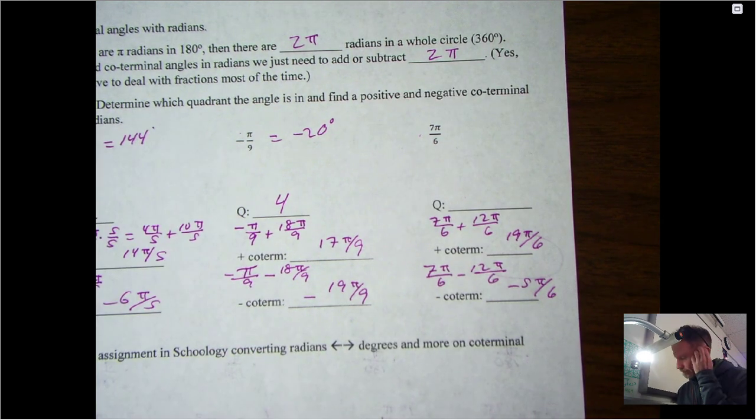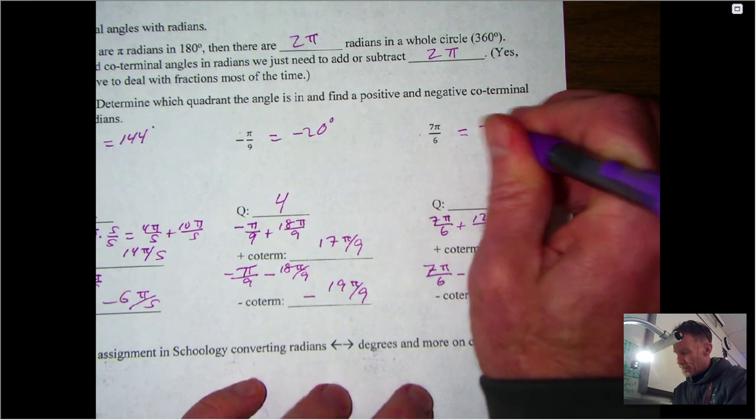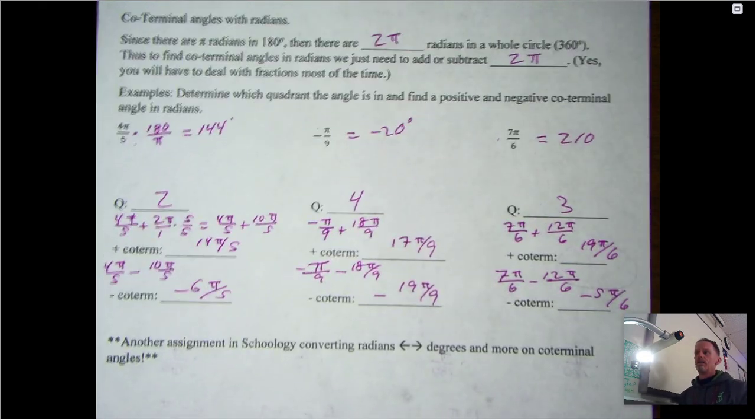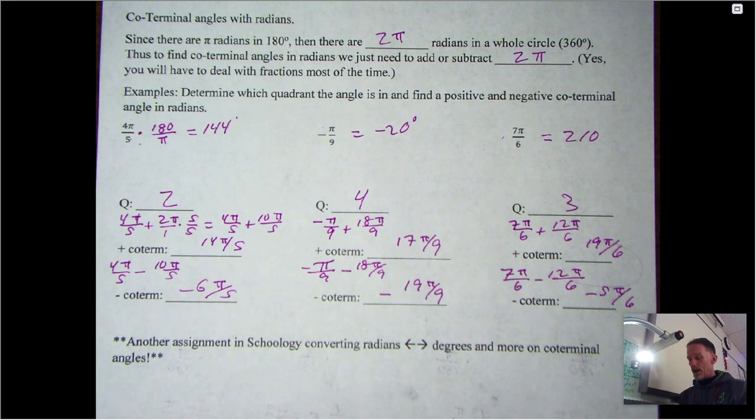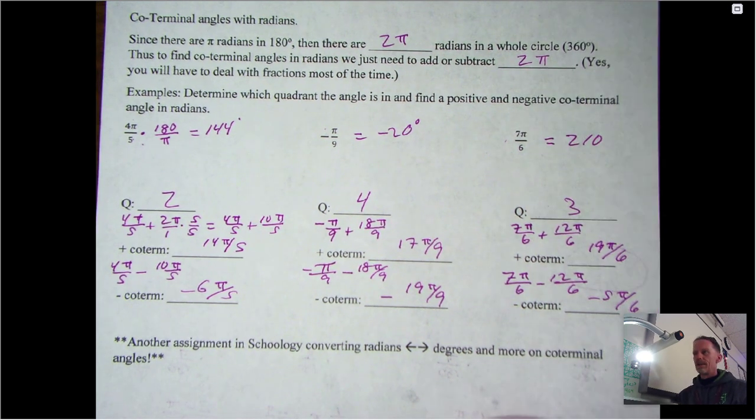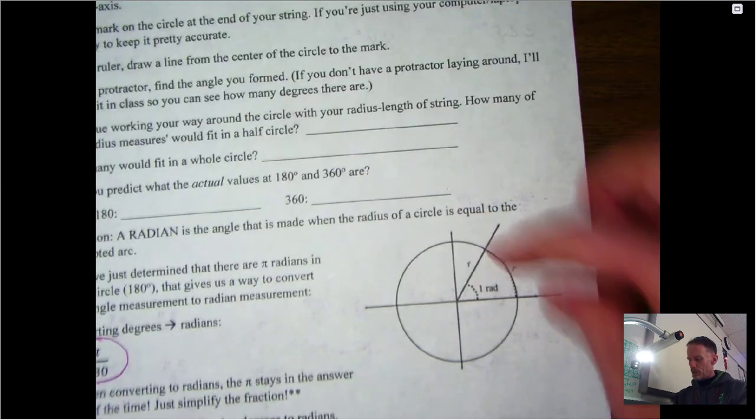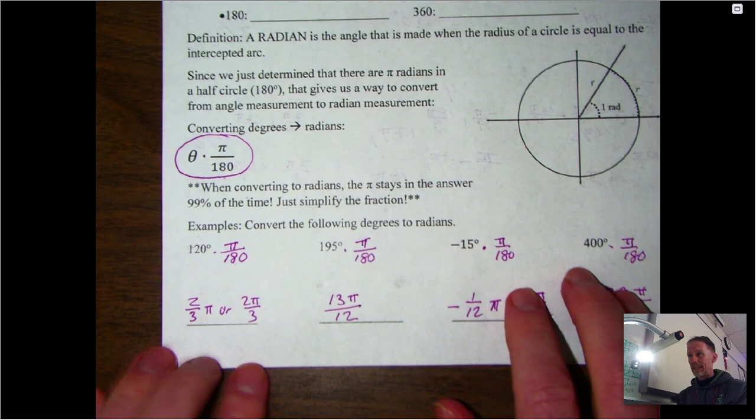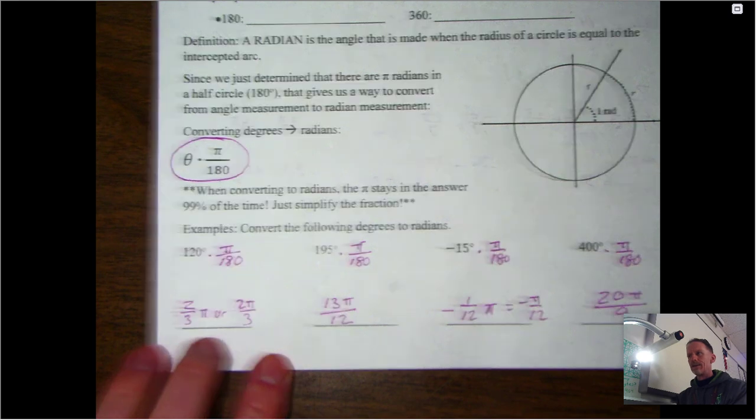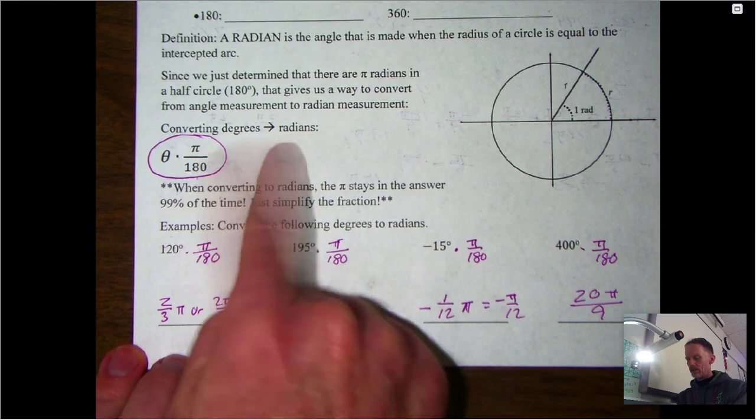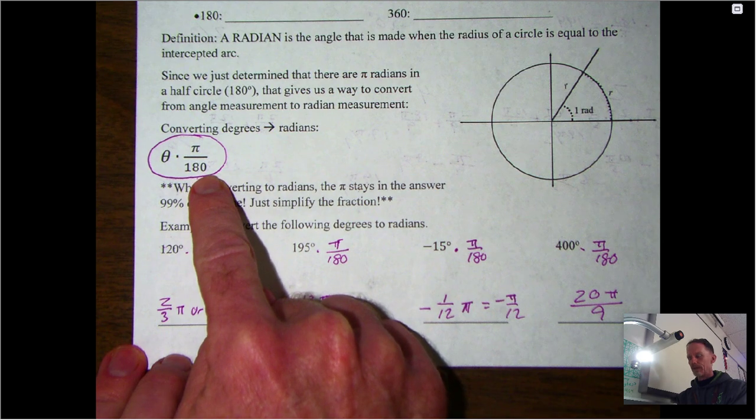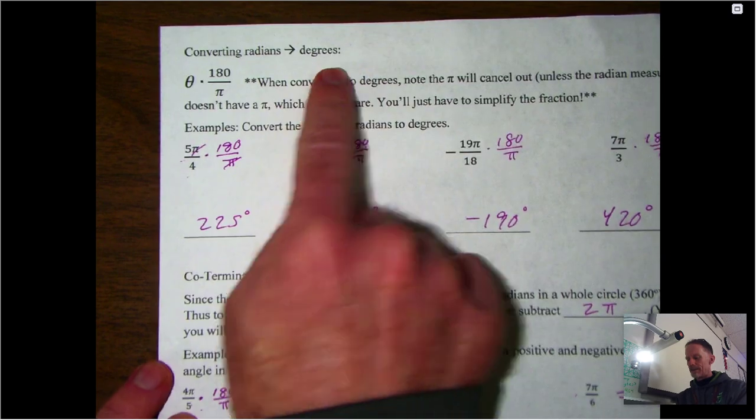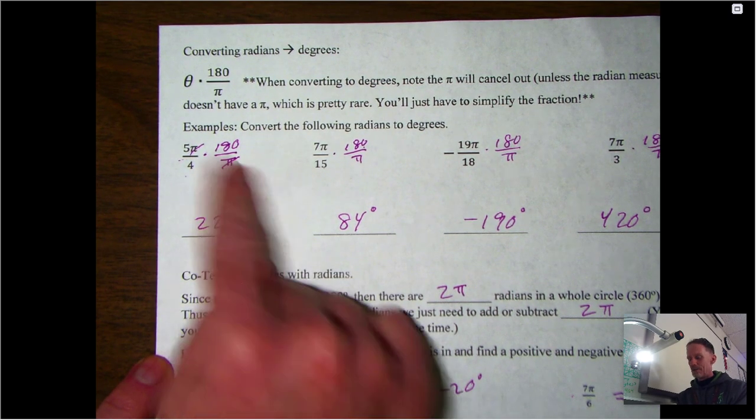Just to recap: one radian happens when the arc of the angle is equal to that radius length. There are π radians in a half circle, 2π radians in a full circle. Converting degrees to radians: multiply by π over 180, leave the π in the answer. Converting radians back to degrees: multiply by 180 over π—the πs will almost always cancel out, simplify the fraction. Co-terminal angles: add or subtract 2π, get your common denominator, and then find the quadrant.